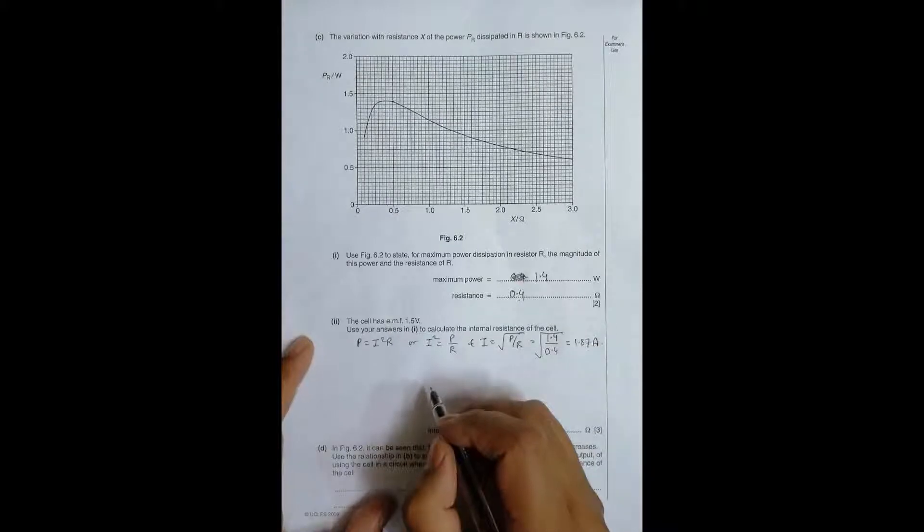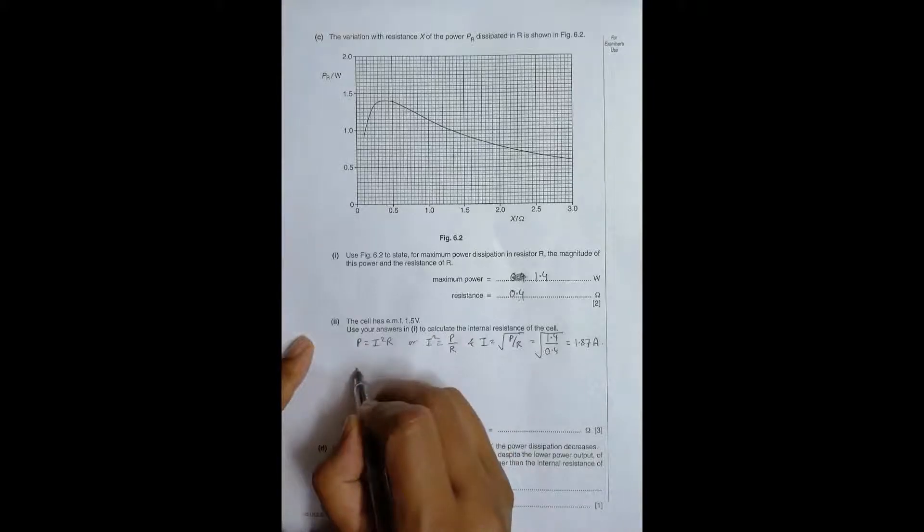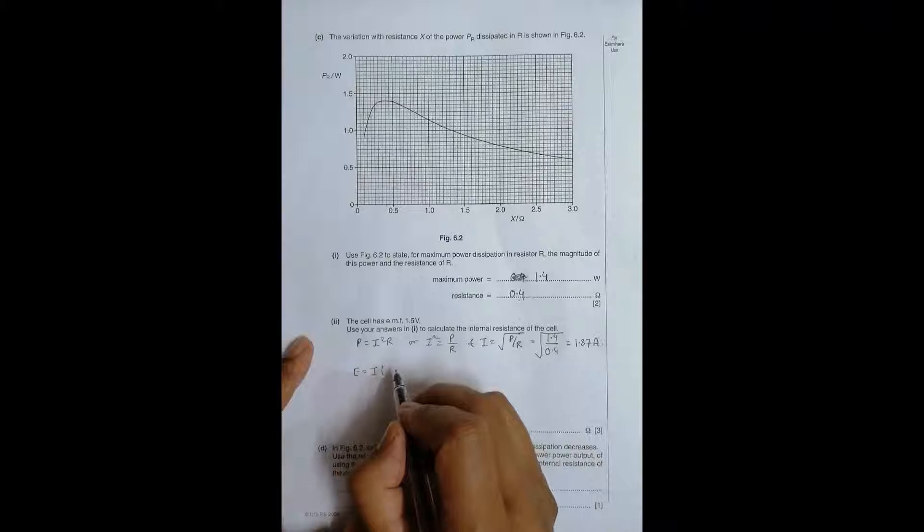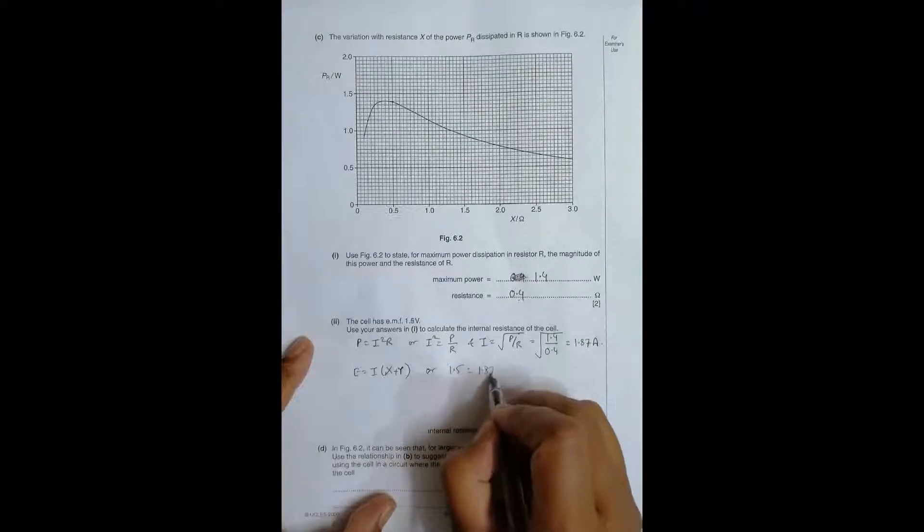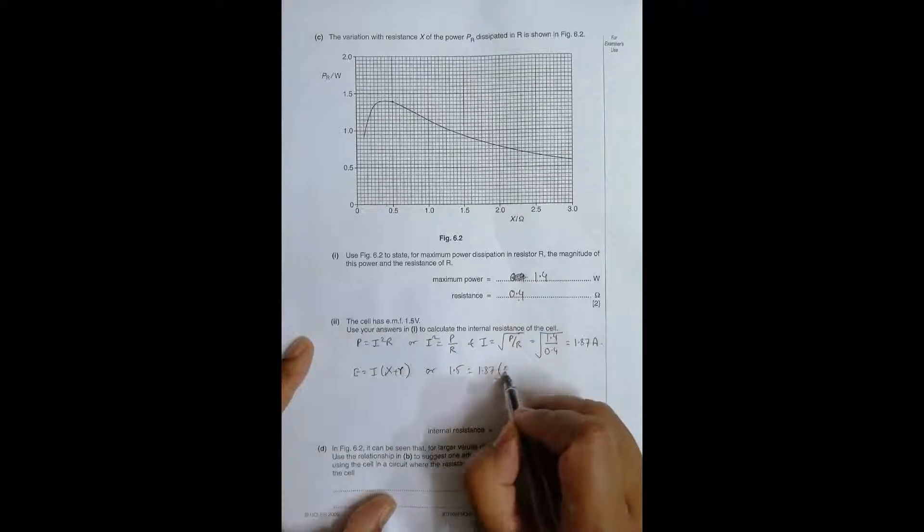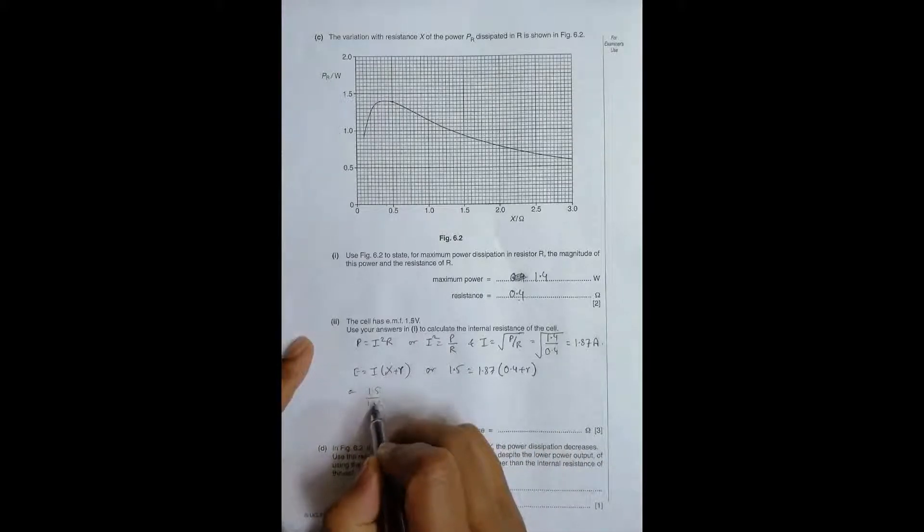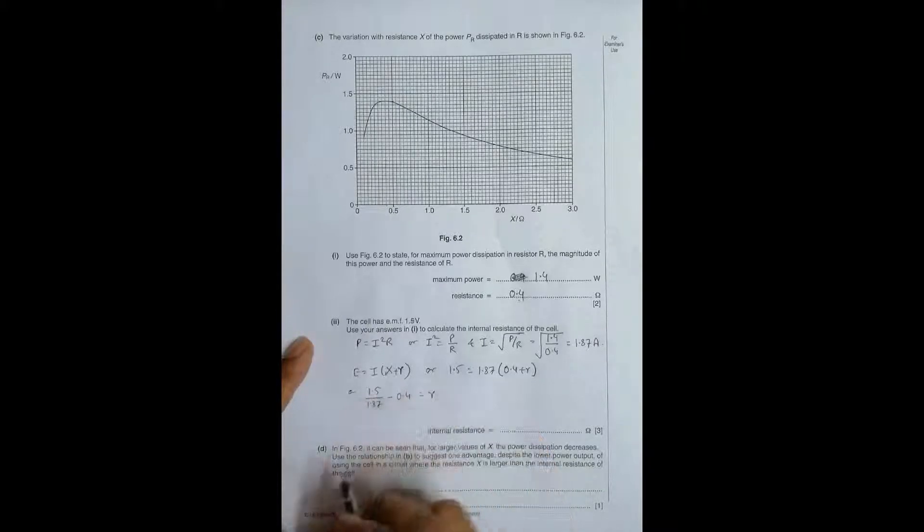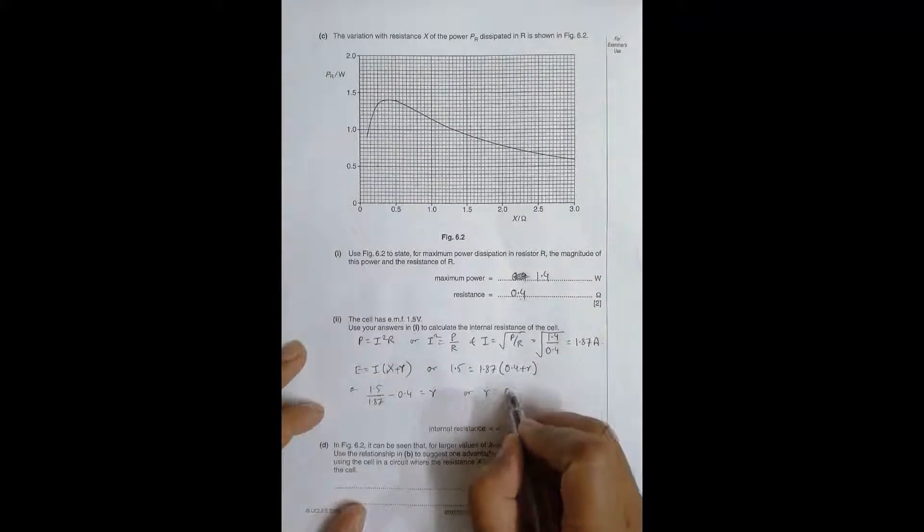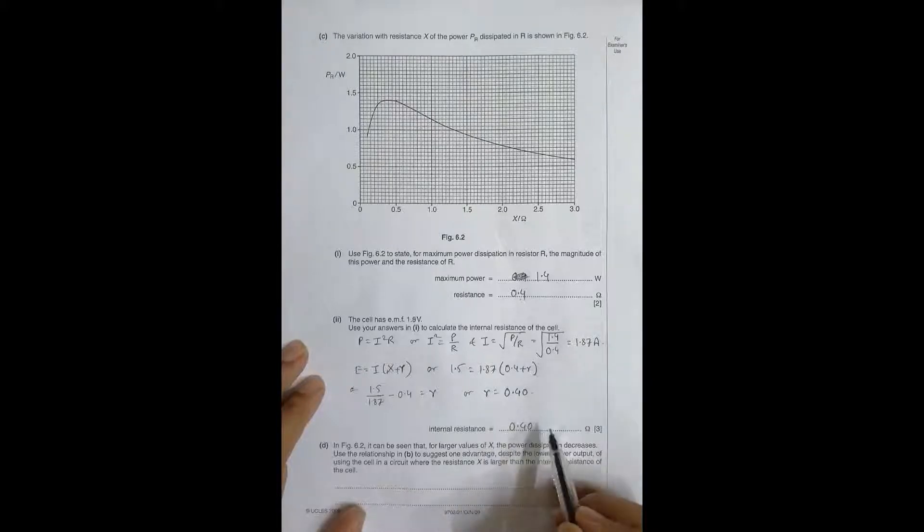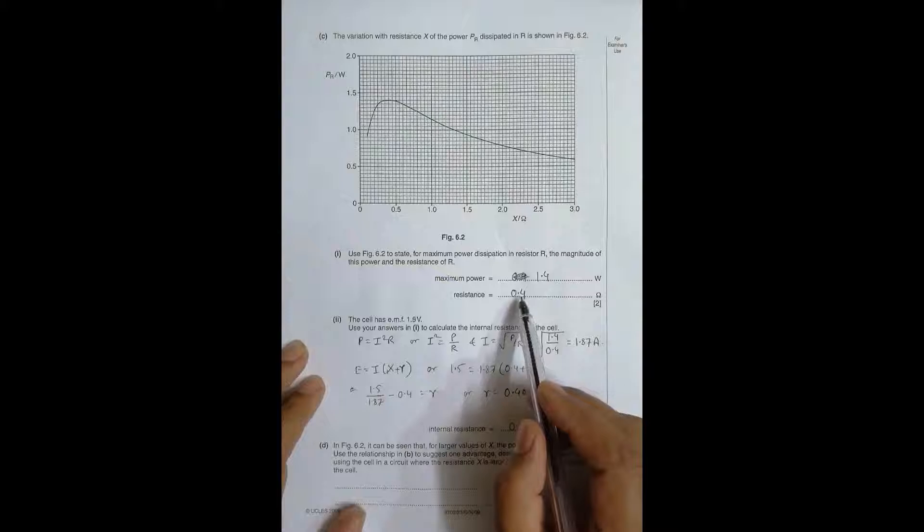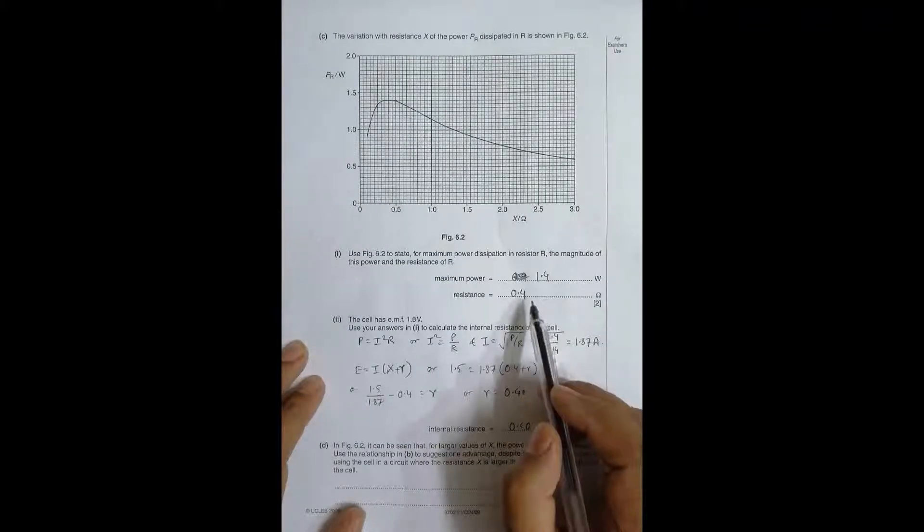Now we can apply E equals I times X plus R. So 1.5 equals 1.87 times 0.4 plus R which gives us R equals 1.5 by 1.87 minus 0.4 equals 0.40 ohm. So the value of inner resistance and the value of external resistance are almost equal for greater efficiency.